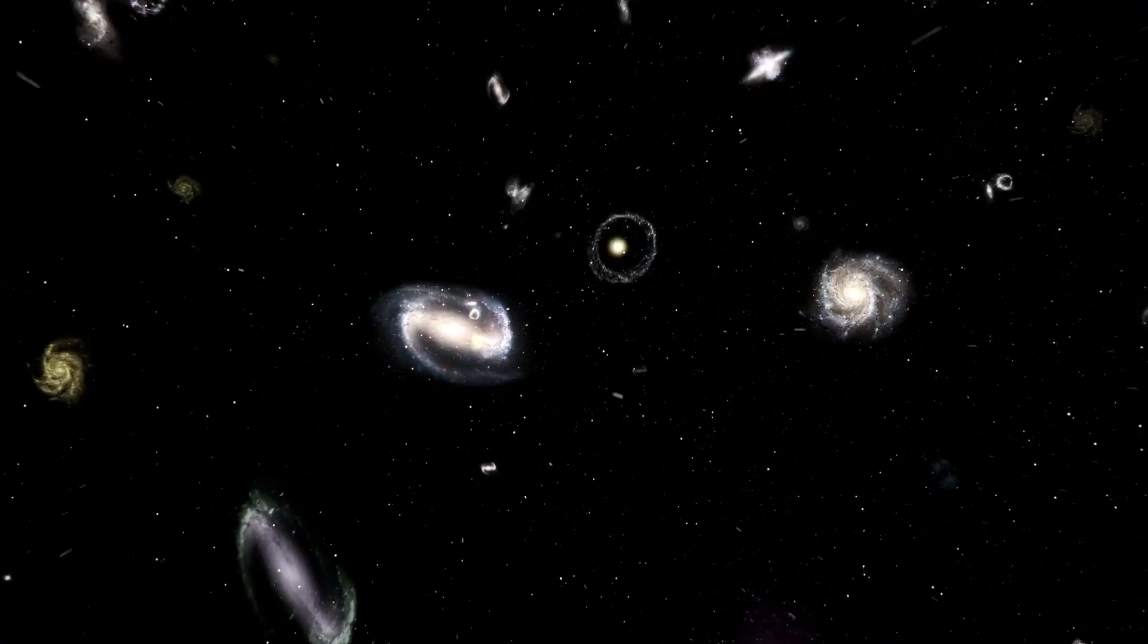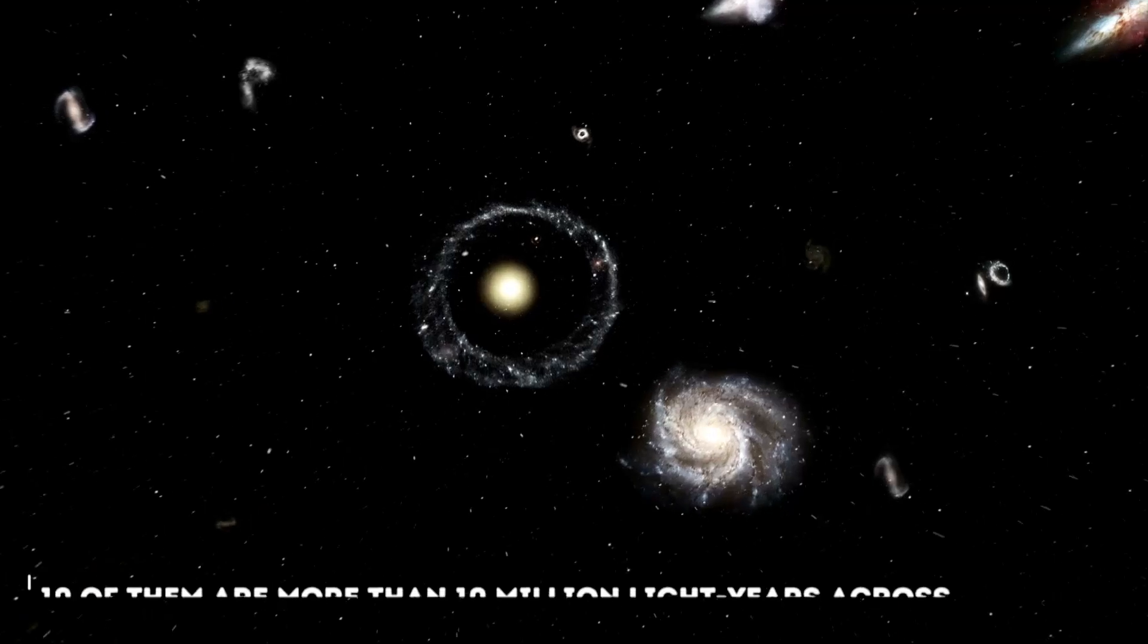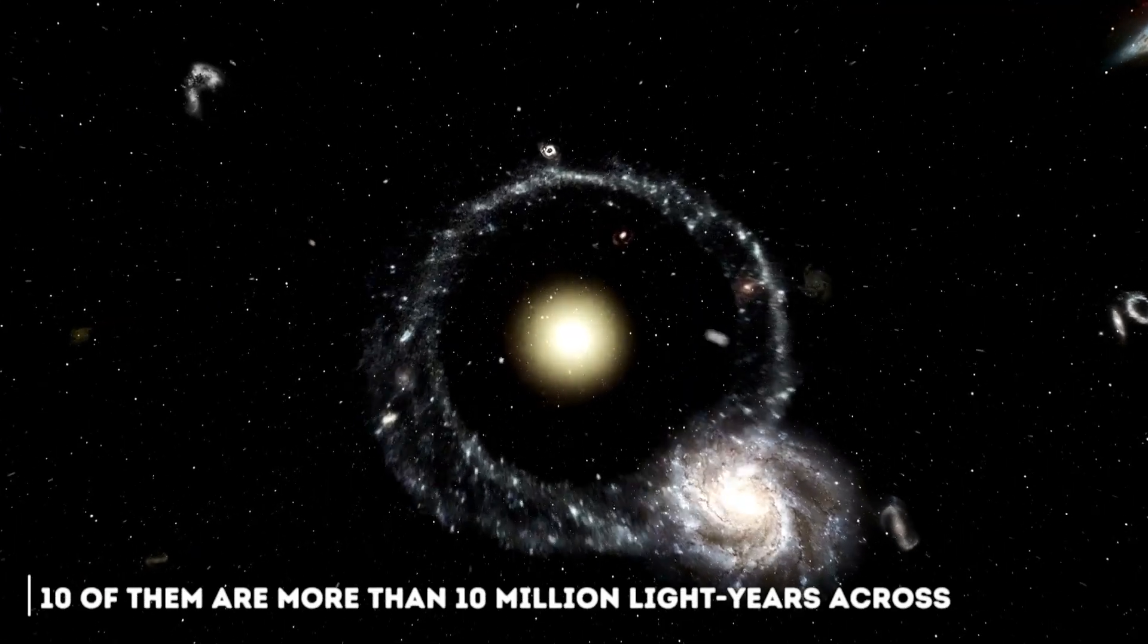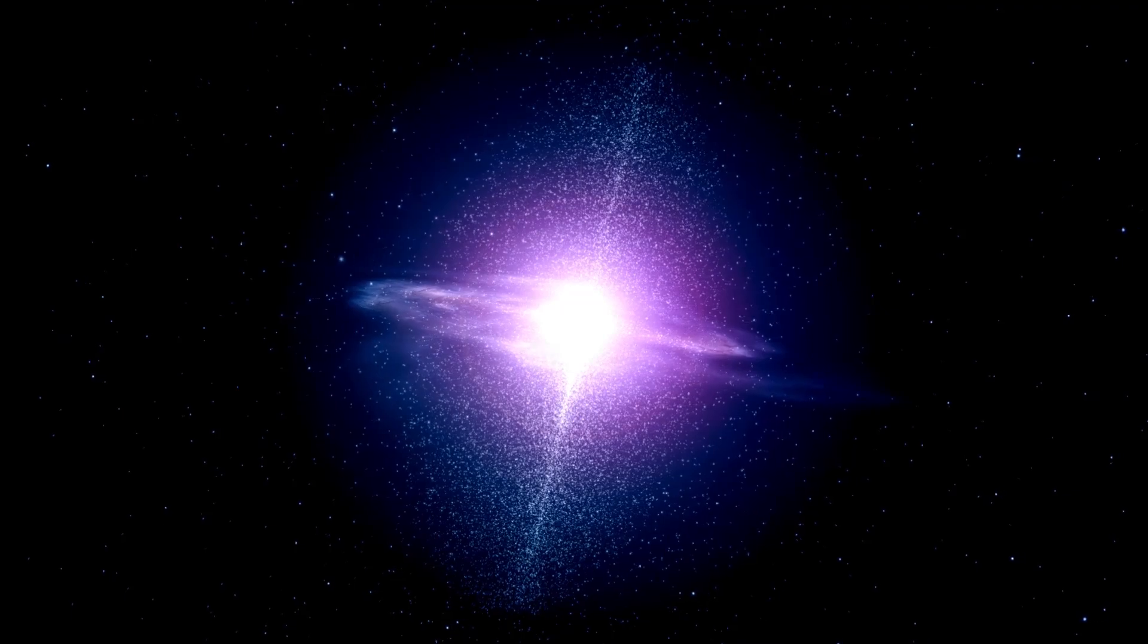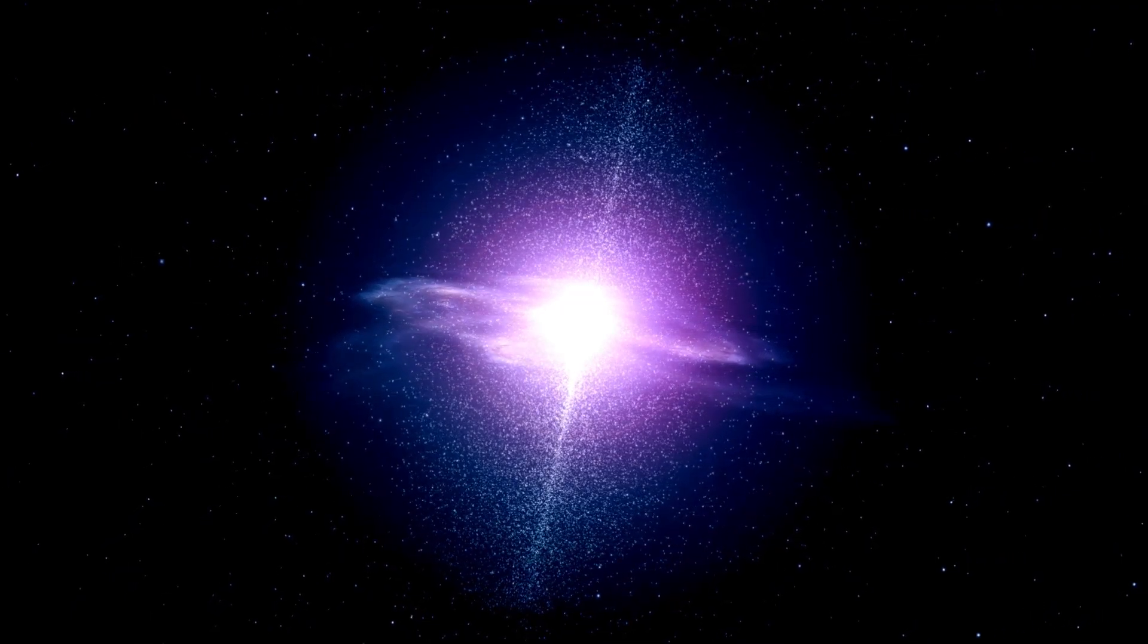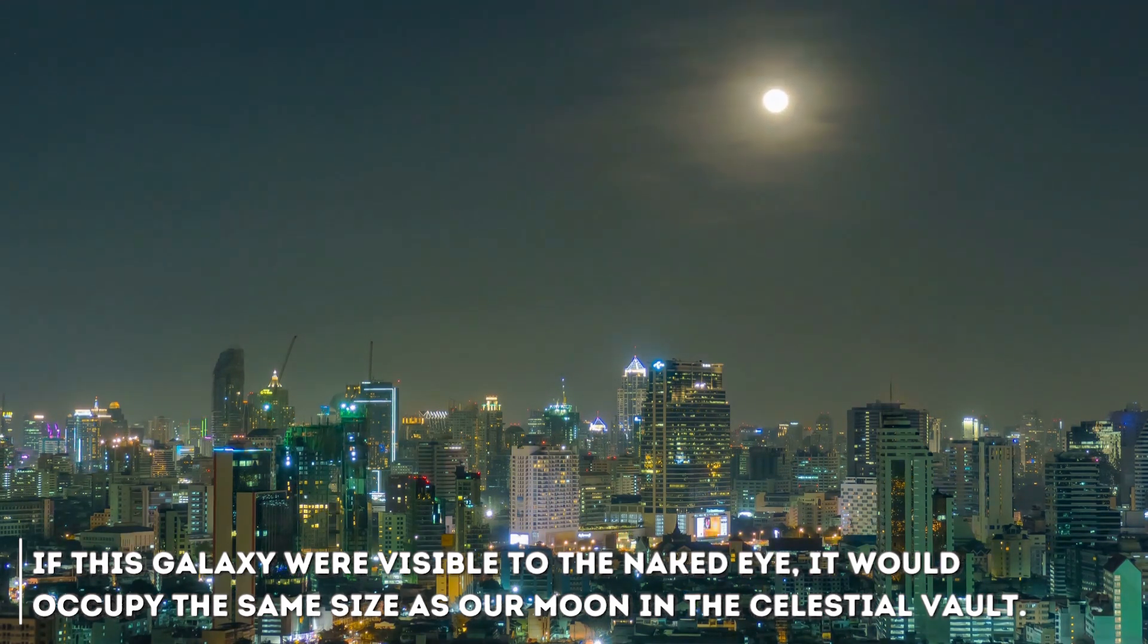To date, there are approximately 1,000 radio galaxies known to exist, of which only 10 of them are more than 10 million years across. With its size and being located 3.5 billion years away, if this galaxy were visible to the planet, it would occupy the same as our moon in the celestial vault.